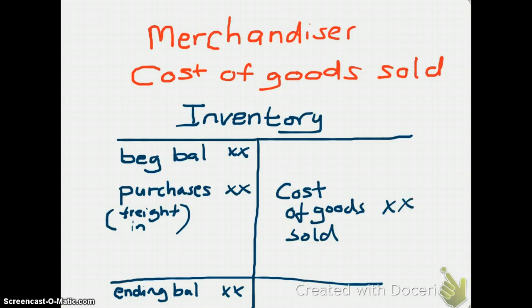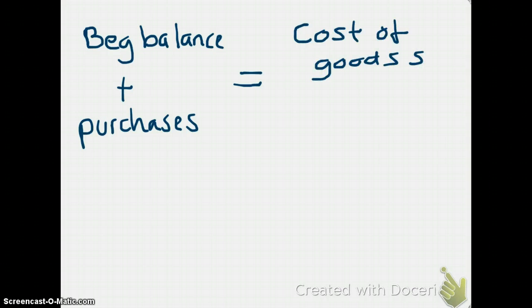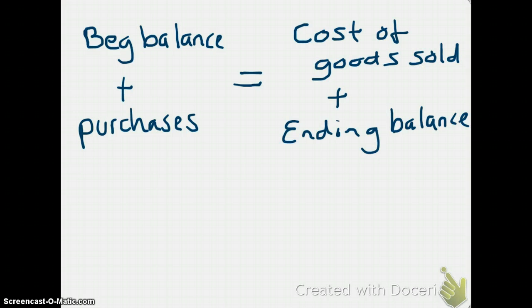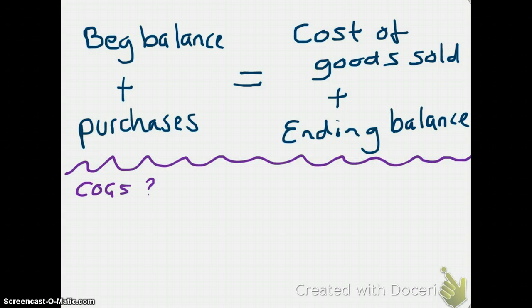As inventory is sold to customers, the cost of the inventory that is sold decreases your inventory account — we call that cost of goods sold. The general entry is that we debit our cost of goods sold account and we credit our inventory. A lot of your accounting problems will give three of the four elements and ask you to calculate the fourth. Beginning balance plus purchases is equal to cost of goods sold plus the ending balance of inventory.